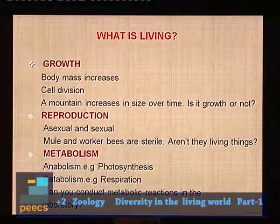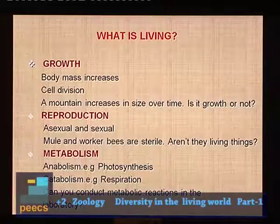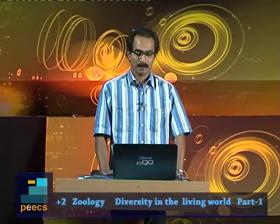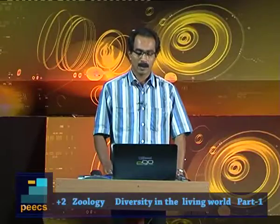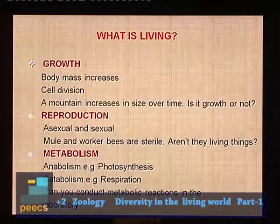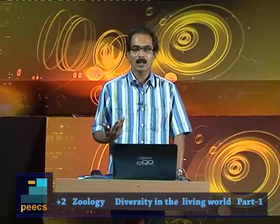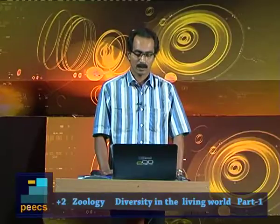Another feature of living things is metabolism. Every second, large numbers of chemical reactions take place in the cells of an organism. The sum total of all these reactions is called metabolism. Metabolism can be divided into anabolism and catabolism. Anabolism is a building-up reaction — something is produced, for example photosynthesis, where carbohydrates are produced by reacting carbon dioxide and water in the presence of sunlight.